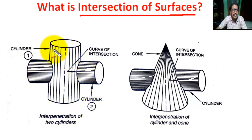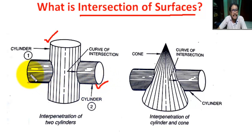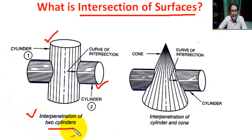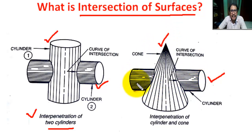In this figure, this is cylinder one and this is cylinder two. Here cylinder two penetrates cylinder one — it is the interpenetration of two cylinders. In this figure, it is a cone and a cylinder. Here the cylinder penetrates the cone; it is interpenetration of cylinder and cone.